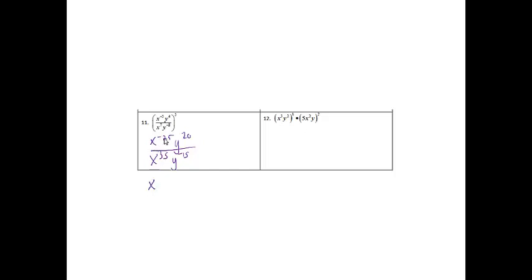So I'm going to get x, negative 25 minus 35 is negative 60. And then I've got y, 20 minus negative 15 is actually a positive 35. Okay, so then I'm not allowed to have negative exponents, so this is going to end up being y to the 35 over x to the 60.